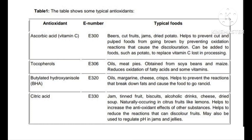This table shows some typical antioxidants: ascorbic acid, tocopherol, butylated hydroxy anisole, and citric acid. This chart shows which antioxidants are found in which typical foods.